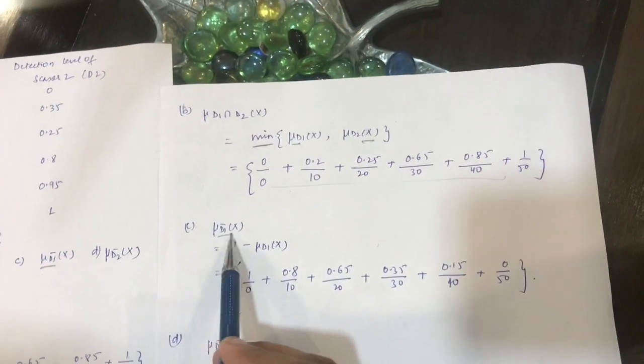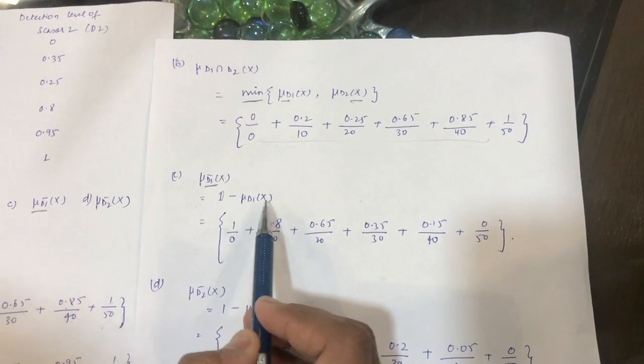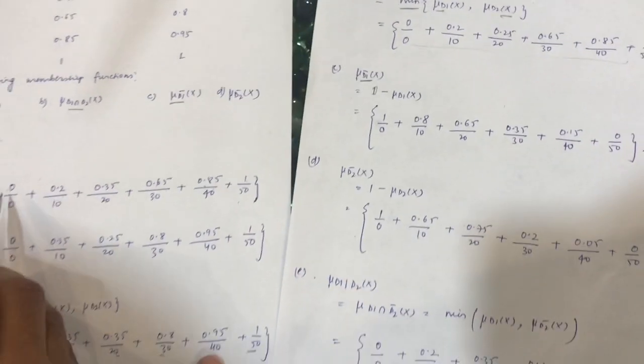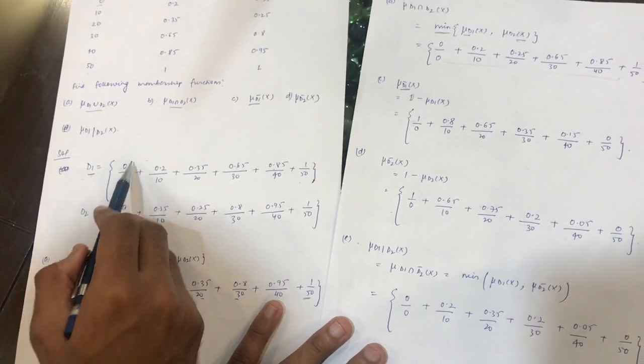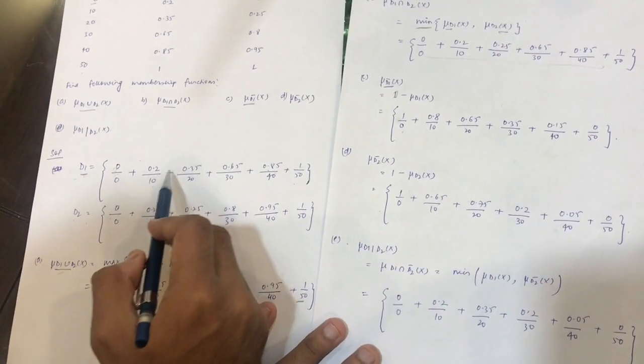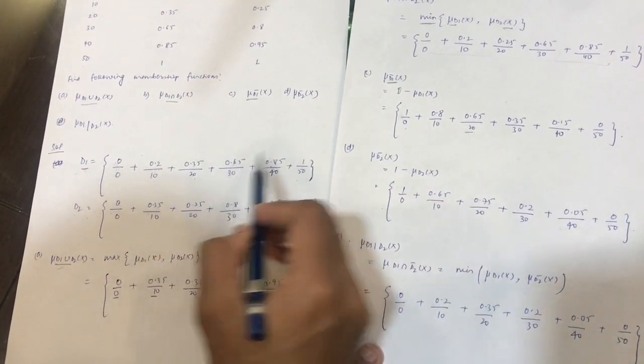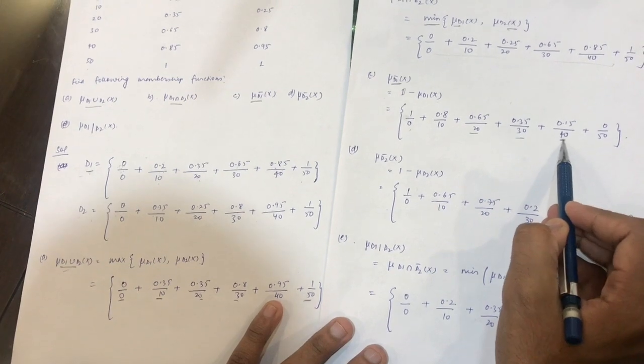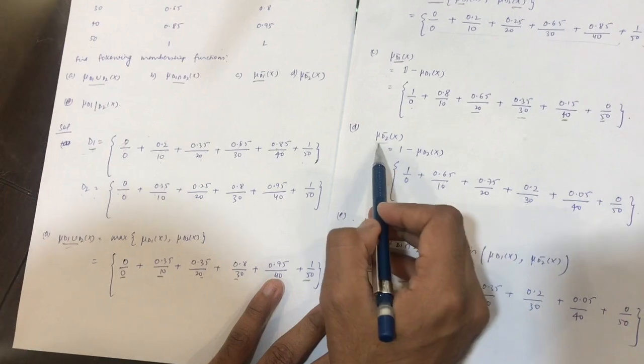For the complement, we simply subtract from 1: 1 - μD1(x). We subtract only the numerator part, not the denominator. 1 - 0/0 is 1/0 + (1 - 0.2)/10 = 0.8/10 + 0.65/20 + 0.35/30 + 0.15/40 + 0/50. Similarly, you can calculate for D2: 1 - μD2(x).